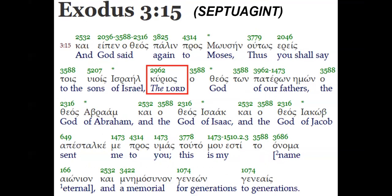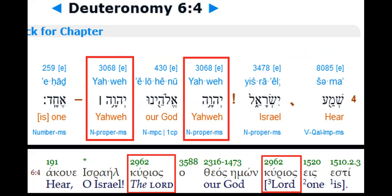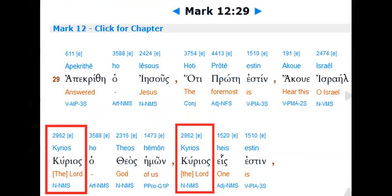This is Exodus 3:15, where God's name is Yahweh, to be remembered forever. In the Septuagint — the Greek translation — the word used is Kurios instead of Yahweh. So they put God's proper name Yahweh and read it as Kurios, meaning 'the Lord,' because they didn't want to take God's name in vain. In Deuteronomy 6:4, the Shema, the original Hebrew says 'Yahweh,' but the Septuagint changes it to Kurios — and this carries into the New Testament when Jesus cites this verse.